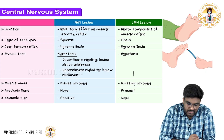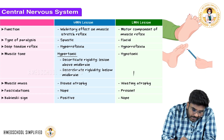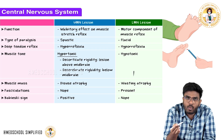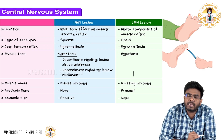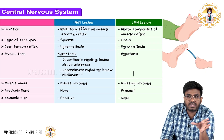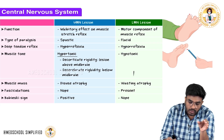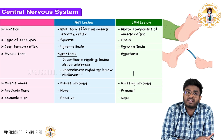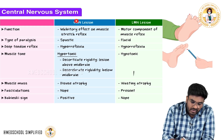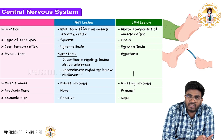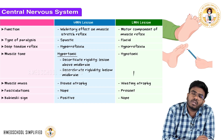Regarding deep tendon reflexes: upper motor neurons are inhibitory on the reflexes, so whenever upper motor neurons are damaged, there is hyperreflexia. In lower motor neuron lesions, since the lower motor neurons are the motor component and efferents of the muscle reflex, when they are damaged, there will be hyporeflexia. Upper motor neuron lesion gives hyperreflexia; lower motor neuron lesion gives hyporeflexia.